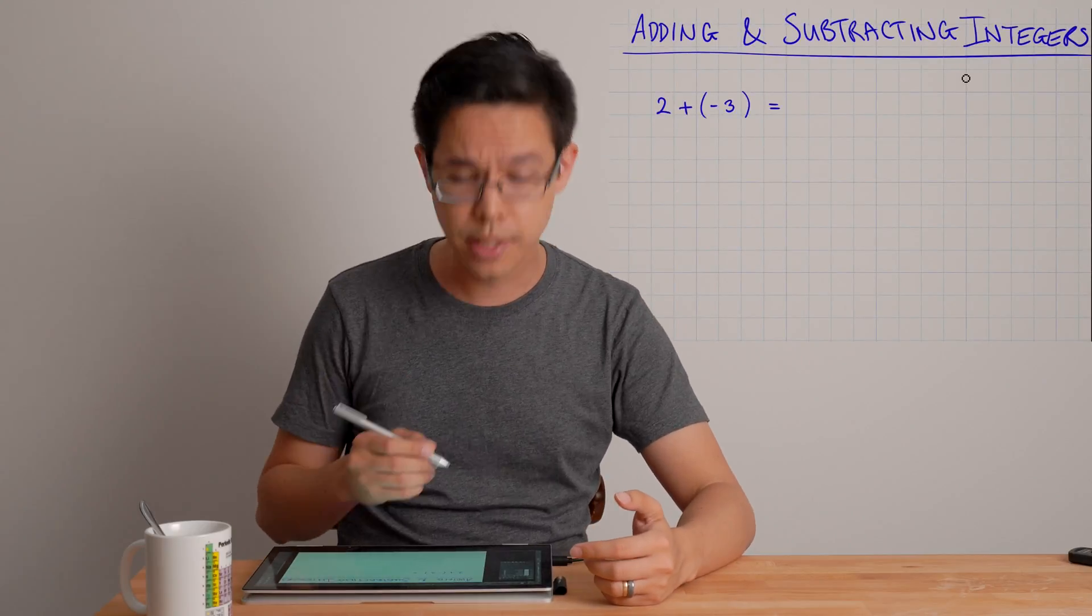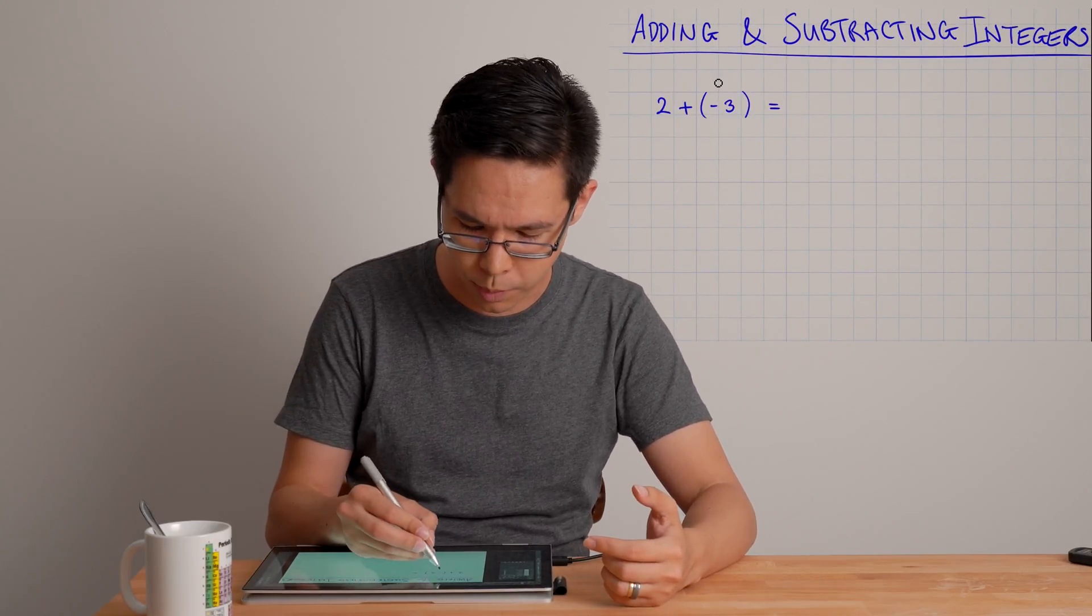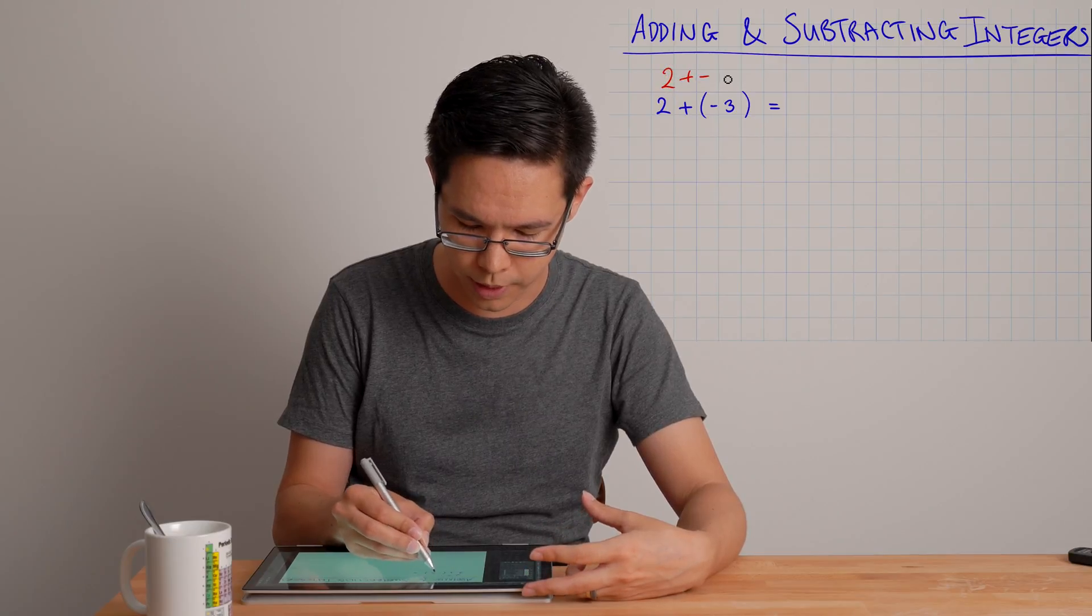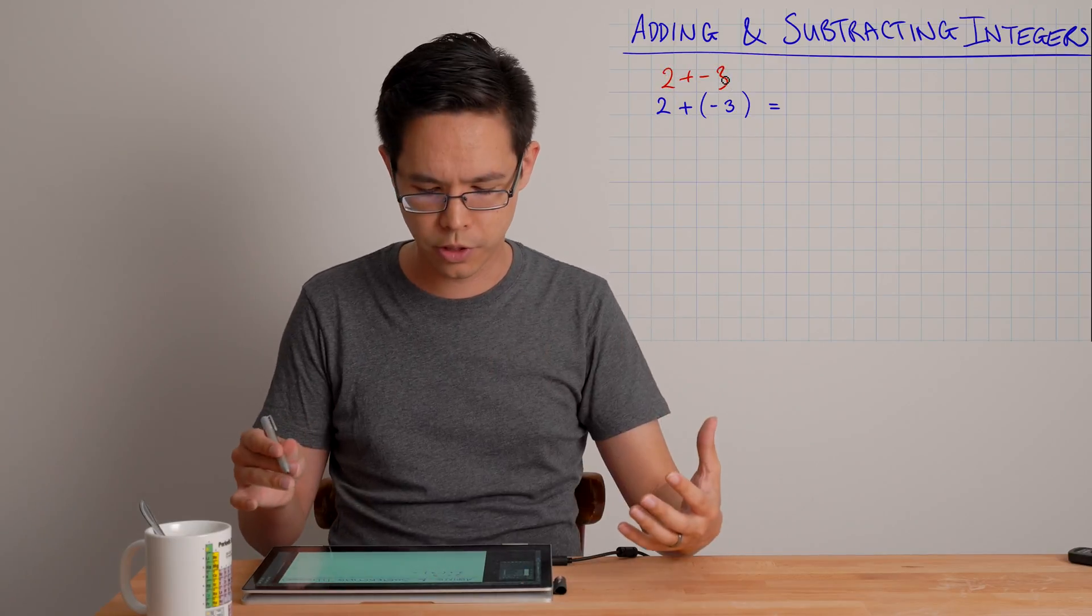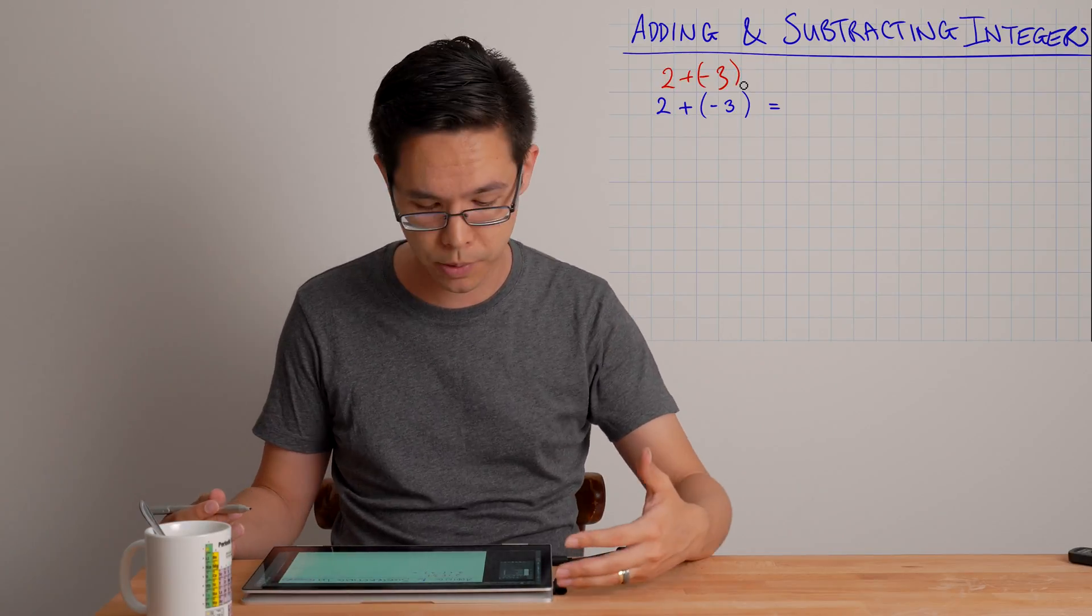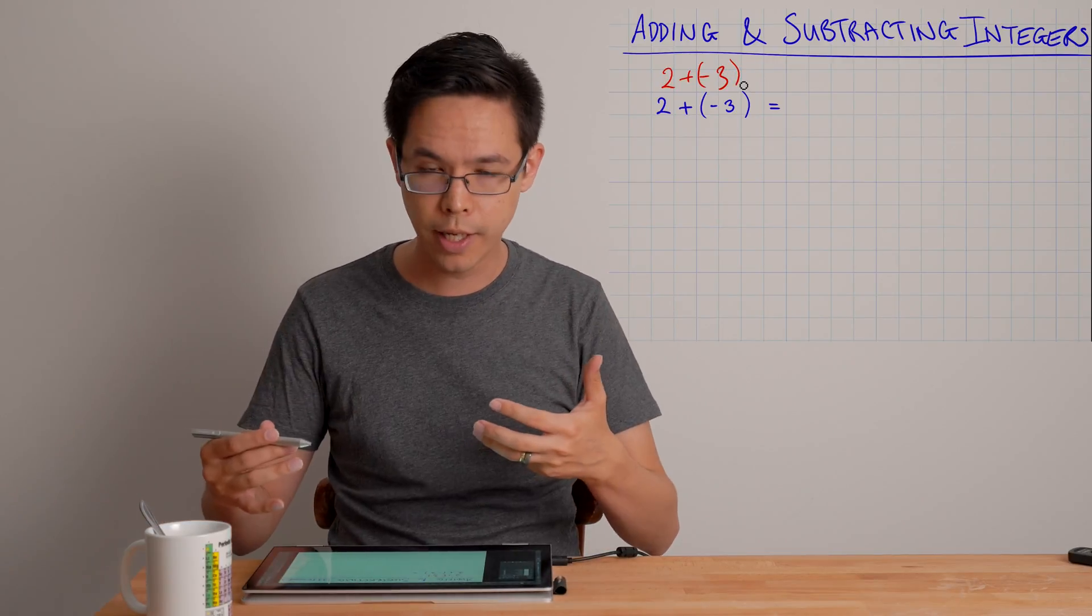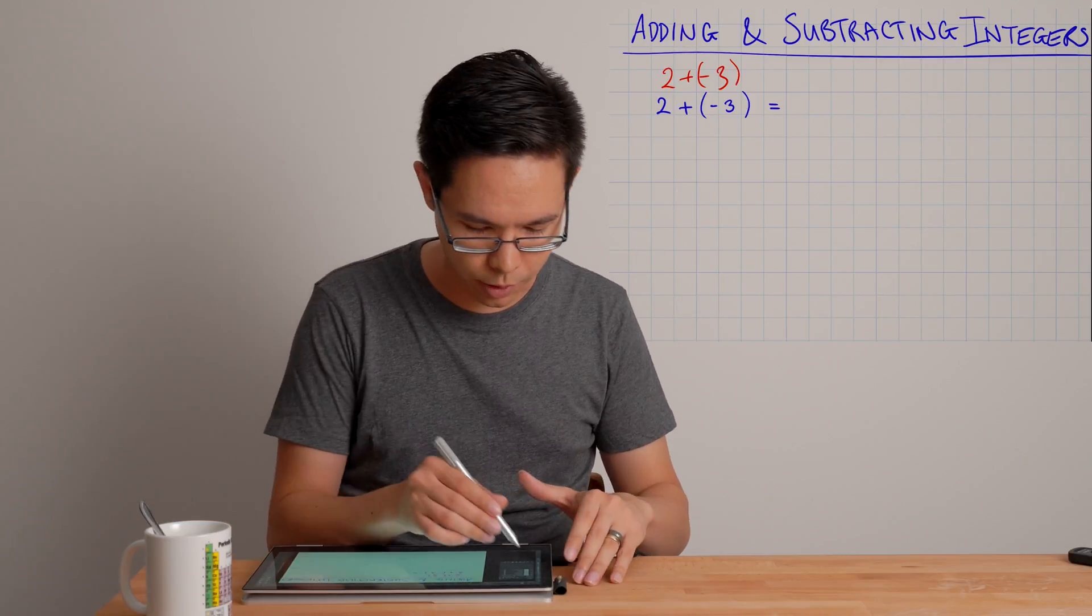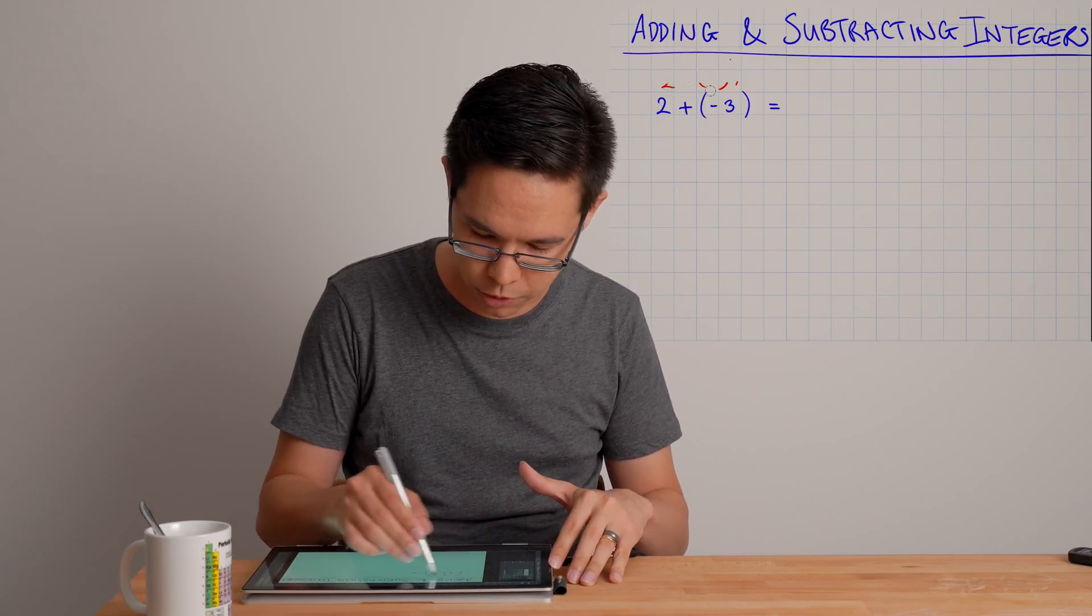So here I've got 2 plus negative 3. Now I'm just using these brackets here so that you don't confuse with 2 plus minus 3. That looks a little bit confusing so we're just putting the brackets around there for communication purposes. Think of it as training wheels for now. When you get more advanced as a senior student you won't need to worry about that.